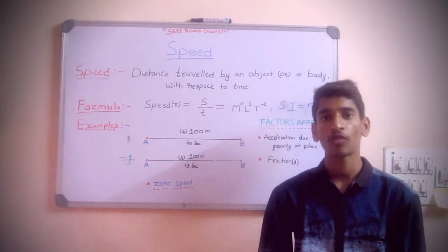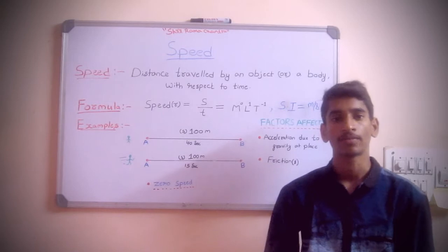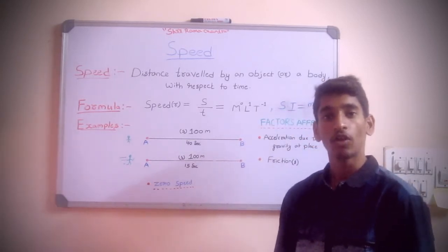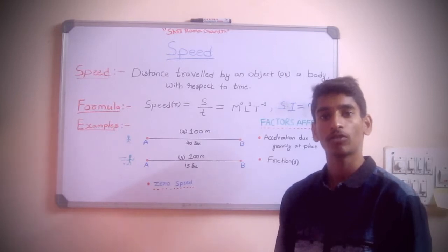Before we get into the topic, we should be aware of the difference between closely related physical quantities: speed and velocity. Speed is a scalar quantity which has only magnitude but no direction. Velocity is a vector quantity which has both magnitude and direction.